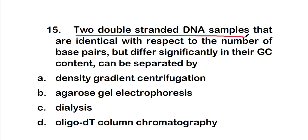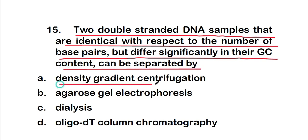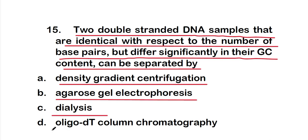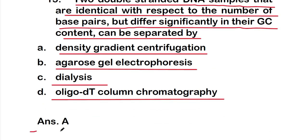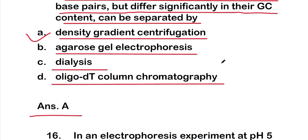Question 15: Two double-stranded DNA samples identical in number of base pairs but differing significantly in GC content can be separated by — A) density gradient centrifugation; B) agarose gel electrophoresis; C) dialysis; D) oligo-dT column chromatography. The right answer is option A — density gradient centrifugation can separate these two DNA samples based on their different GC content.